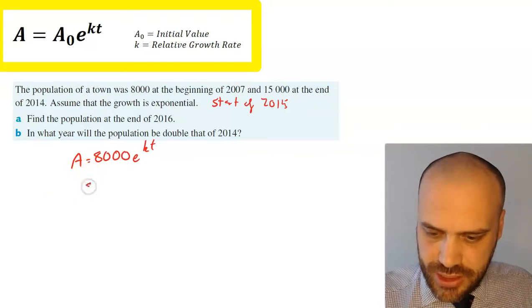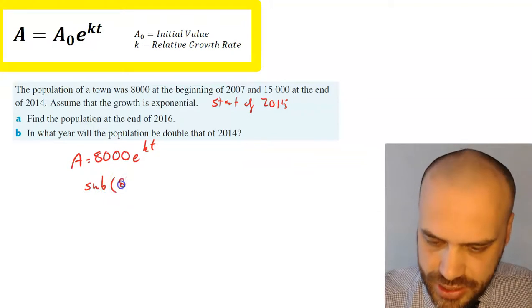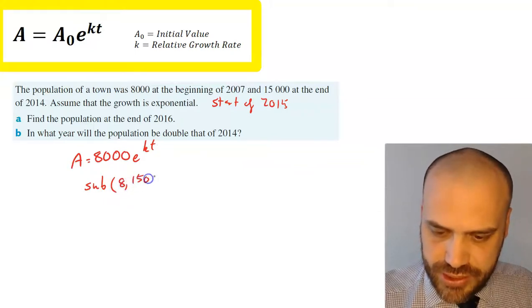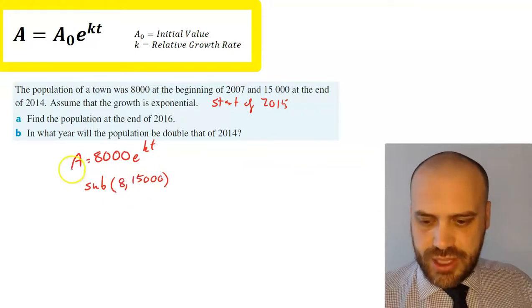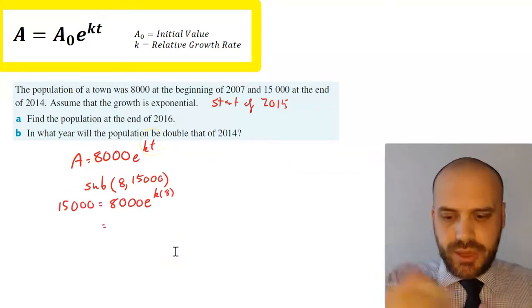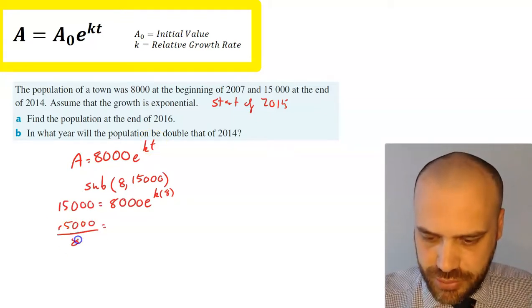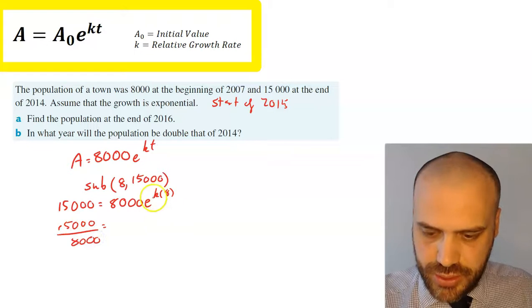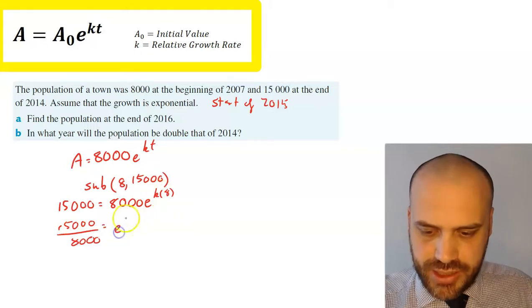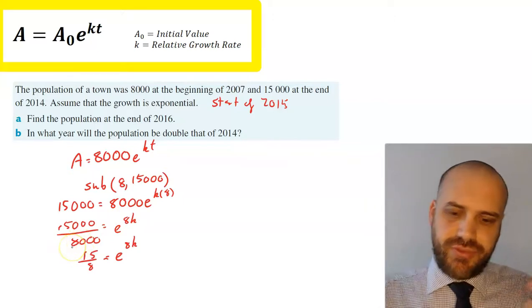So what we know is that given this current model, we can sub in the point (8, 15,000), where 15,000 is this A value and 8 is the time. So once we sub those values in, now we're just solving for k. So 15,000 divided by 8,000 equals e^(8k). So obviously 15,000 over 8,000 is just 15 over 8.